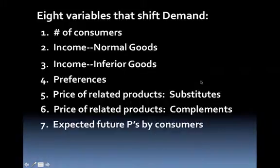The seventh determinant is expected future price by consumers. If you're expecting the price of gas to go up 50 cents — like it did in California recently — you're going to fill up now at the lower price. So if you expect the future price to increase, demand right now increases. If you think the price is going to fall on something, you're going to wait to buy it, which means demand decreases now. If the expected future price is going to decline, you tend to wait and buy the product when the price falls.